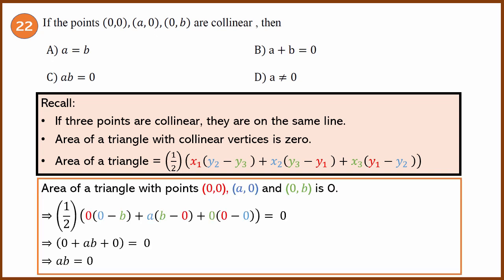So the area of the triangle with points (0,0), (a,0), and (0,b) is 0. Substituting and simplifying, this part becomes 0, this part becomes 0, only this part remains and that is a·b, and a·b equals 0. The half is no longer required because when you take half to the right-hand side, you multiply it with 0, therefore it becomes 0. So the option is C.